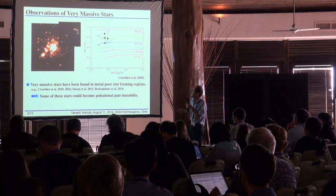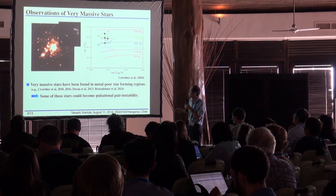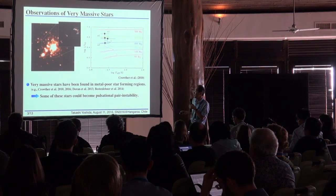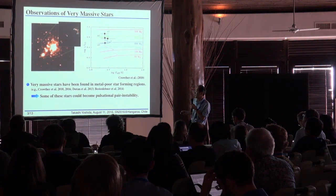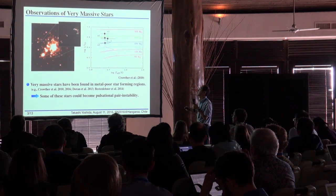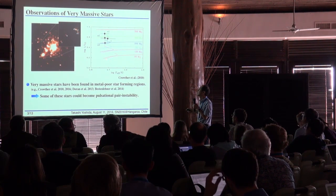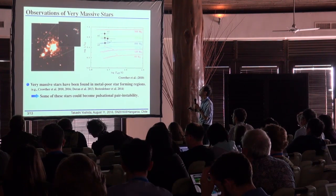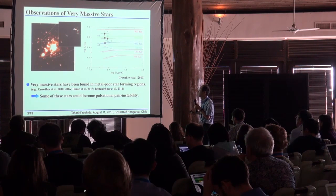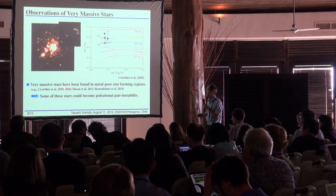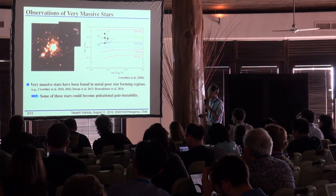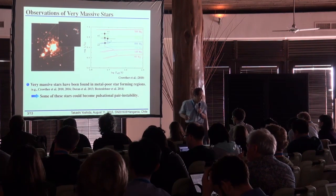On the other hand, recently very massive stars indicating massive stars with initial mass heavier than 100 solar mass have been found in metal-poor star-forming regions. This is the observation of Tanikawa and the stellar evolution calculations by Geneva group. About 200 to 300 solar mass stars have been observed. If some of these encounter mass loss, these stars could become pulsational pair instability supernovae.